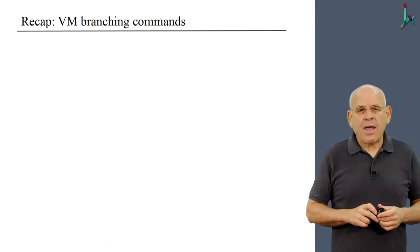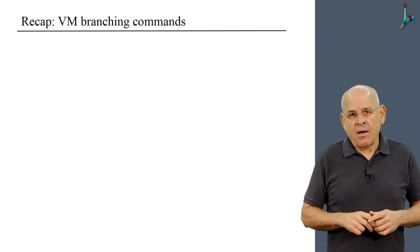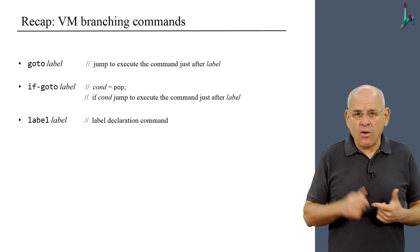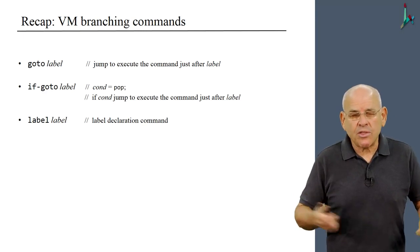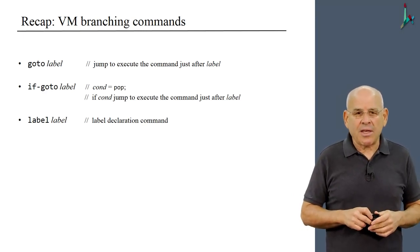So to recap, we have three branching commands: goto, if-goto, and label, without which we could not generate all these labels.